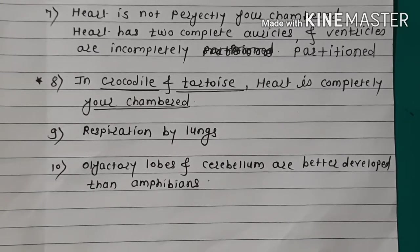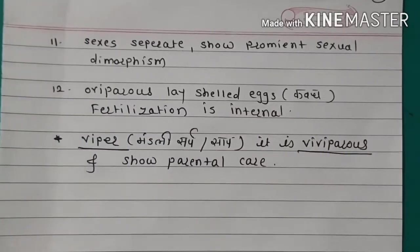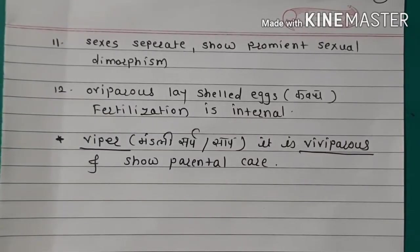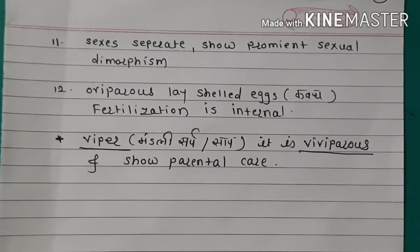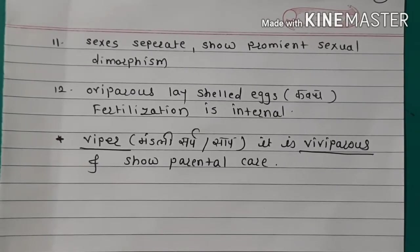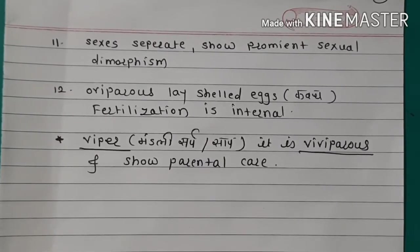Respiration is by lungs. Olfactory lobes and cerebellum are better developed than in amphibians. Sexes are separate. It shows prominent sexual dimorphism. Oviparous reptiles lay shelled eggs. Fertilization is internal. But the viper is viviparous — it gives birth to young ones and shows parental care.